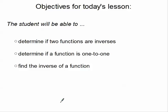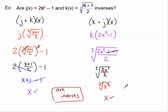Here is tutorial two, and we're going to be looking at the second objective: to determine if a function is one-to-one. The previous tutorial just ended with this problem where we proved that j of x and k of x are indeed inverses.